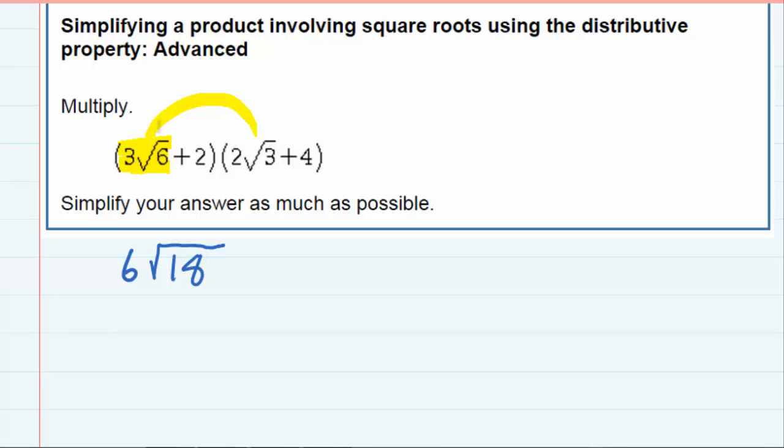And then to finish the distribution, I would take the three square roots of six and multiply them by the second term, which the three and the four are both outside the radicals, so three times four is a positive 12.